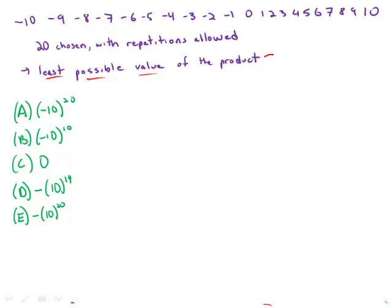So least possible value - what we want is something that is going to be a big negative number. We want to maximize the absolute value and make sure that it is negative.